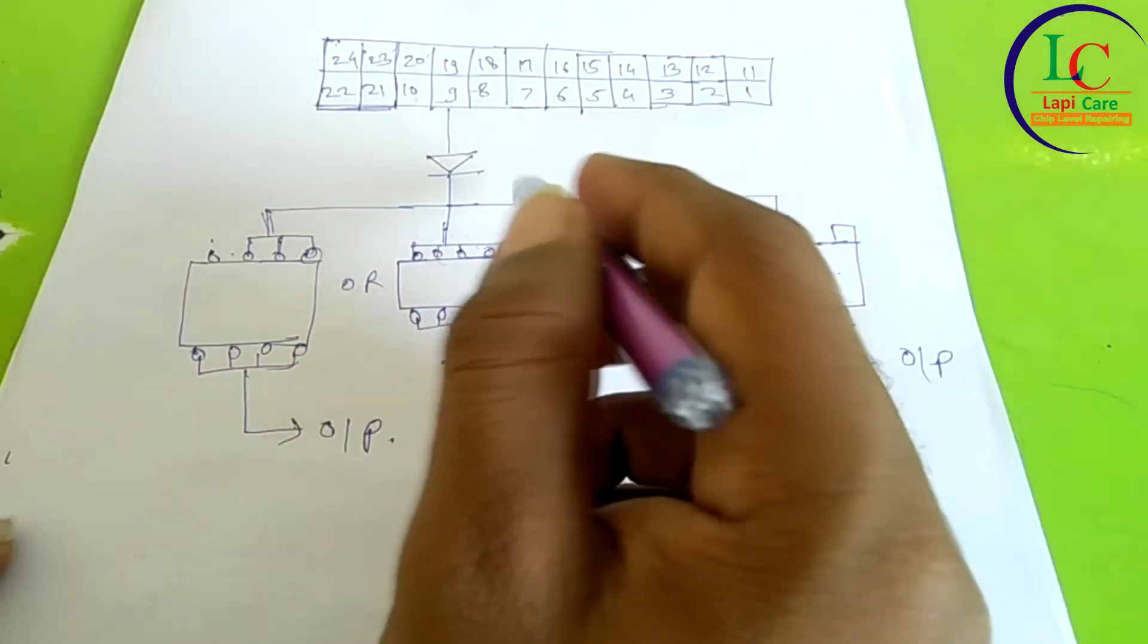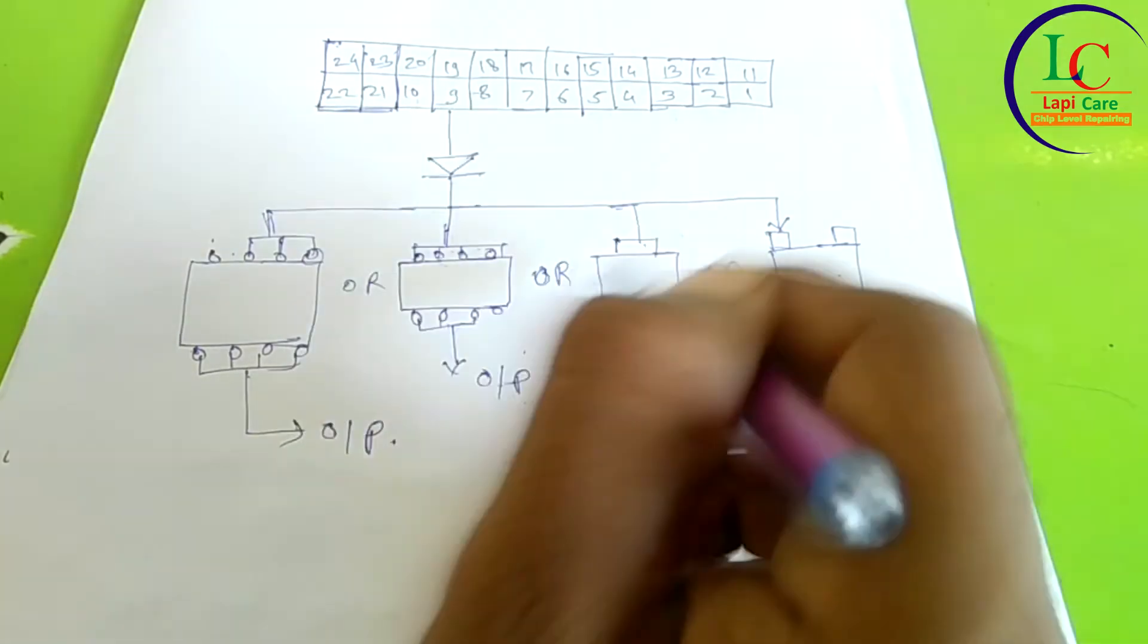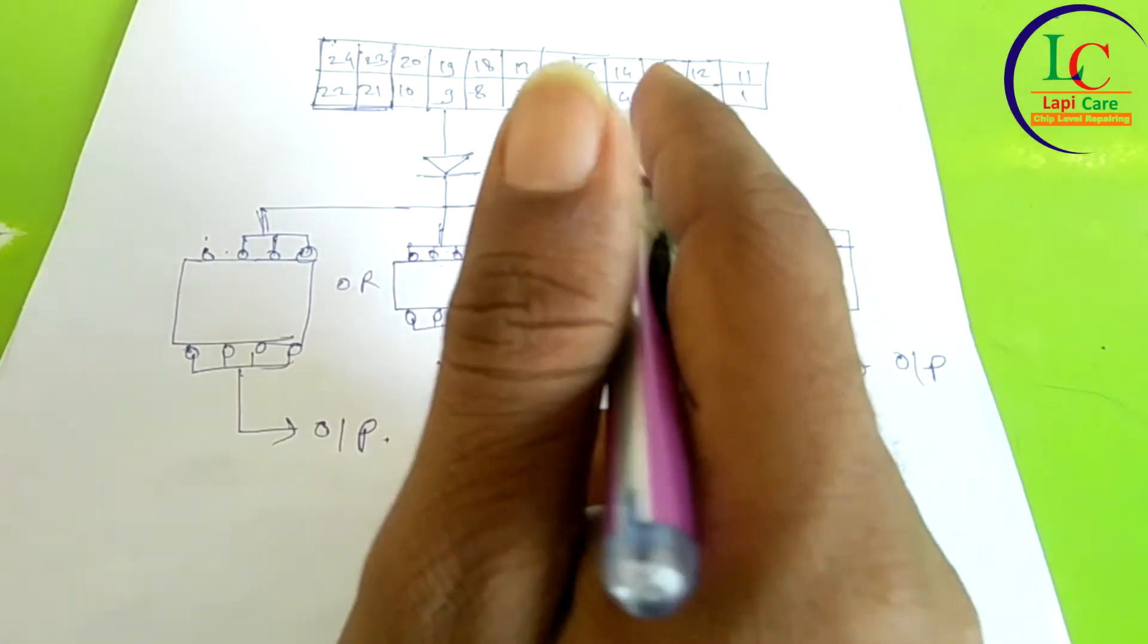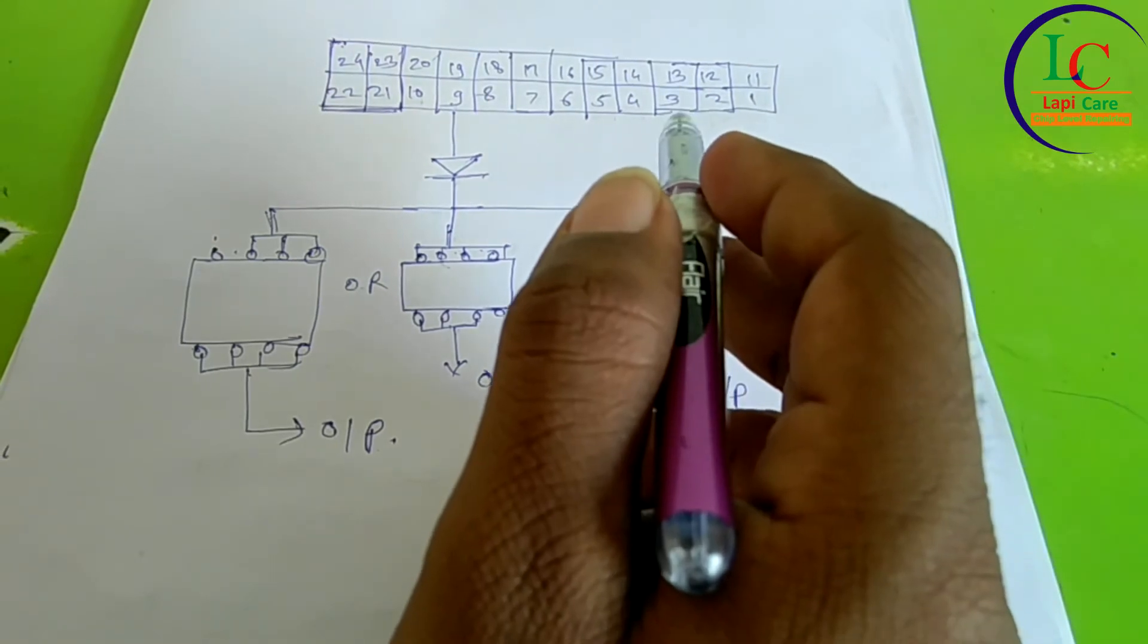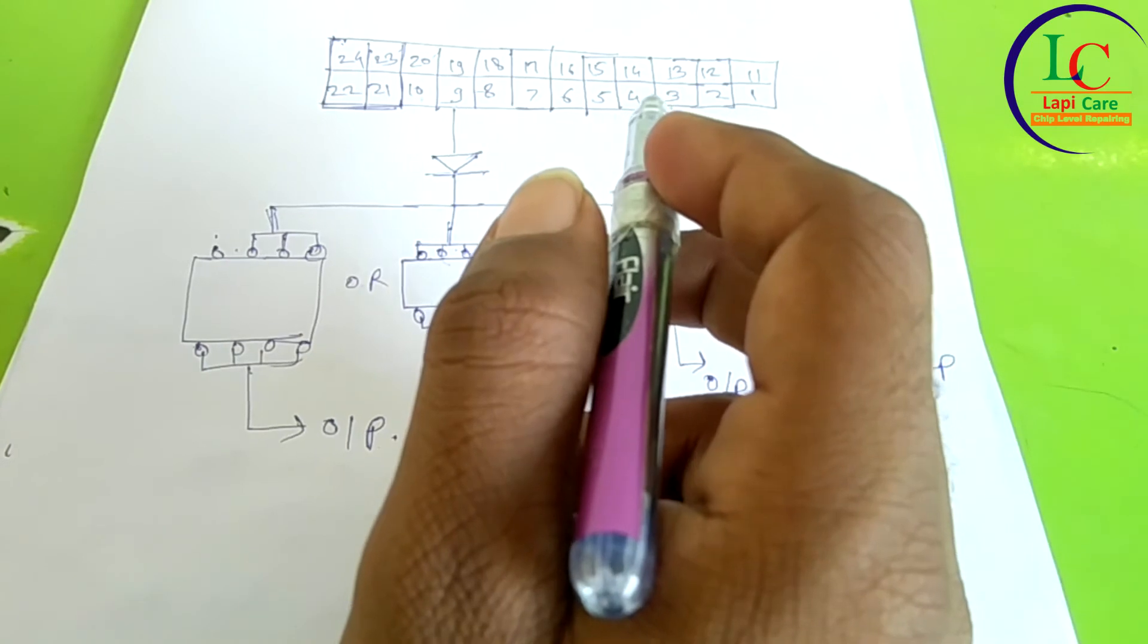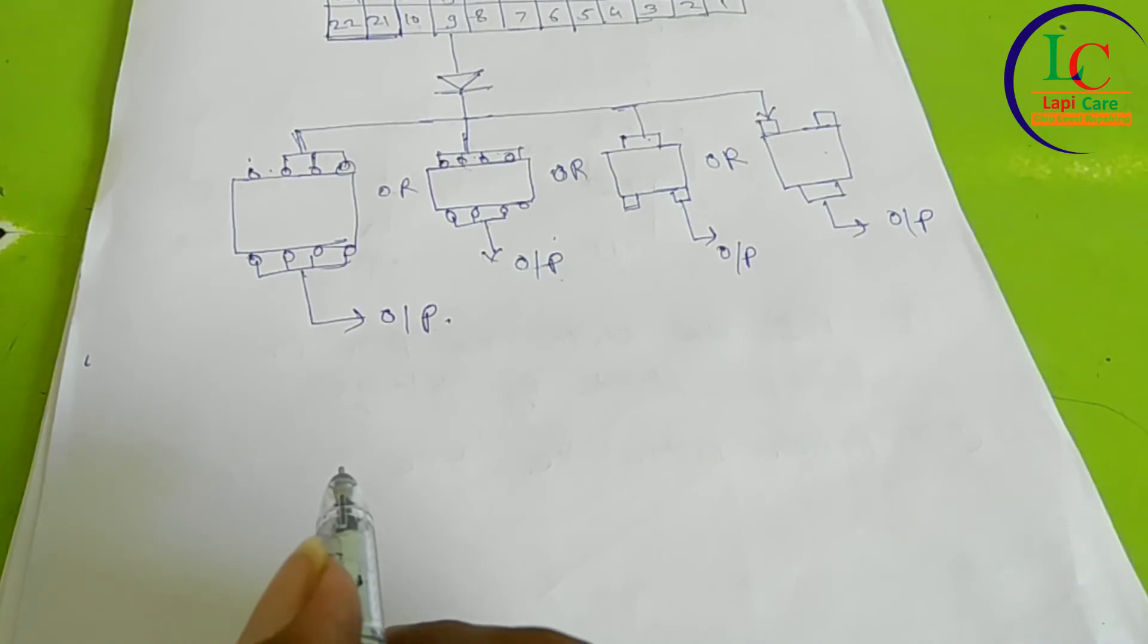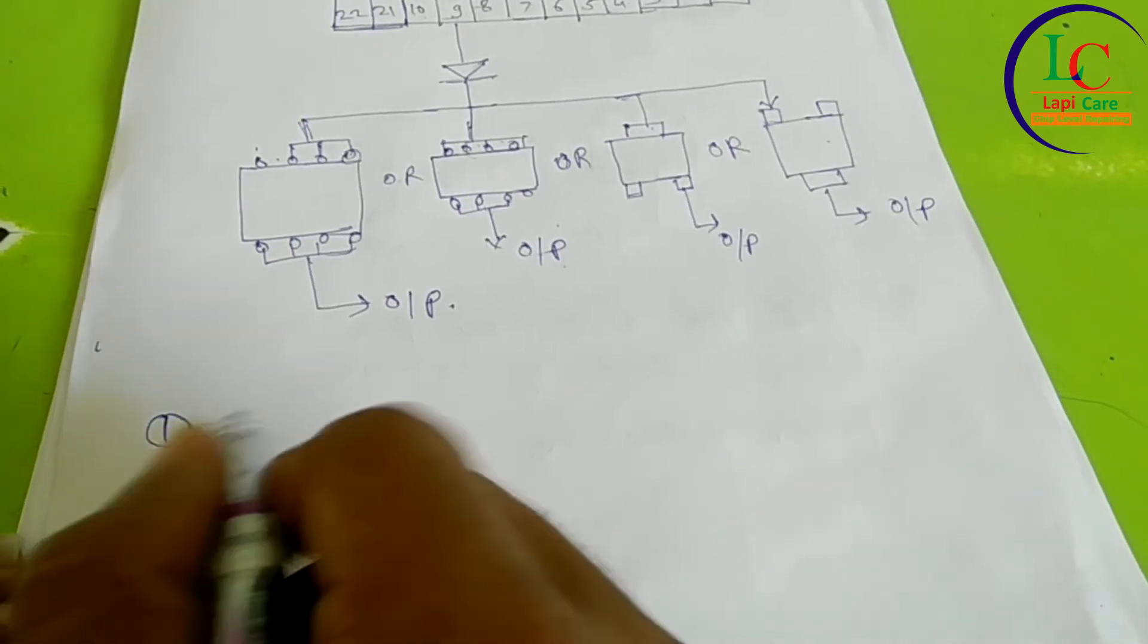And sometimes there is some capacitor also in between this path. So we have to check that capacitor. Now we are tracing this standby voltage. So we have to check whether the standby voltage is coming or not. So how to test the standby voltage is 5V and 3.3V. We have to test where the standby voltage is coming or not.